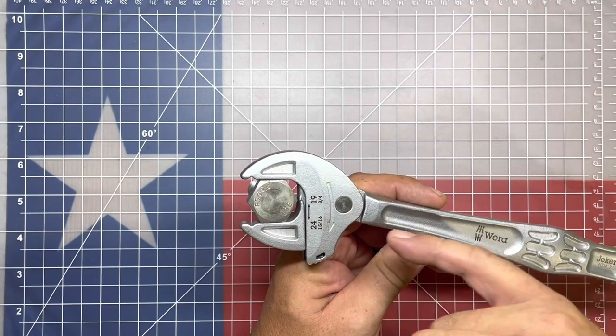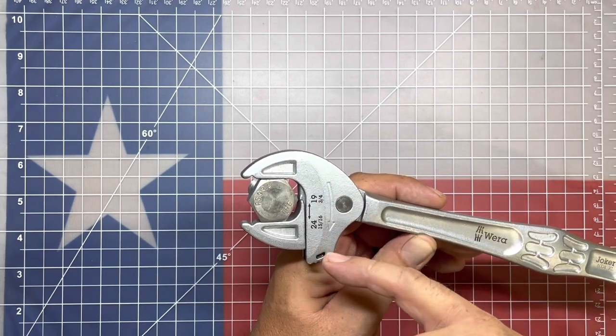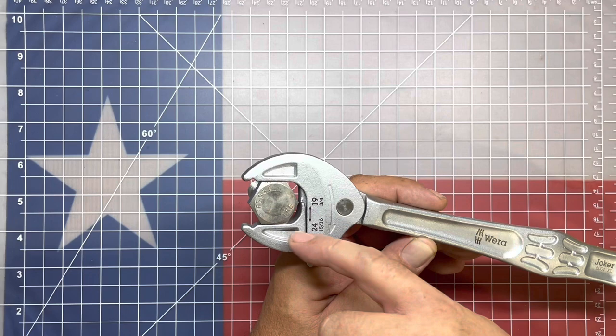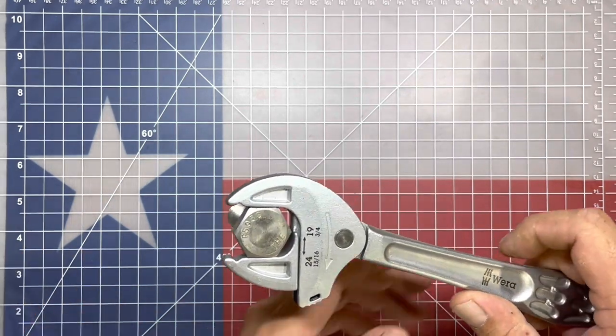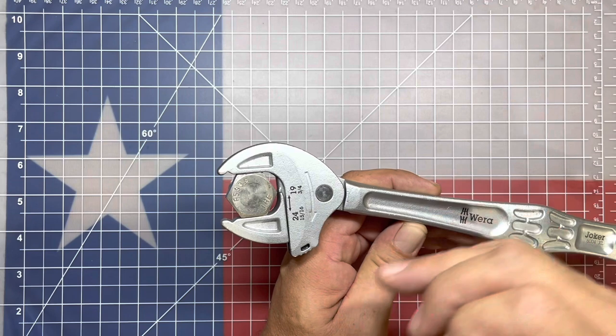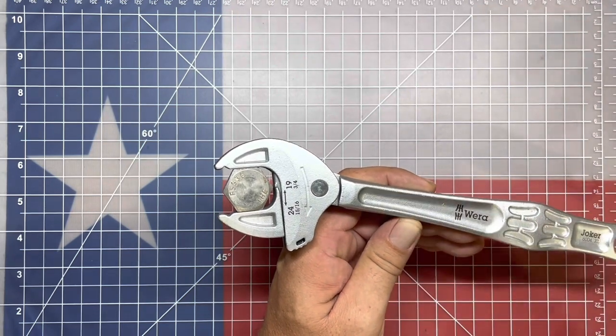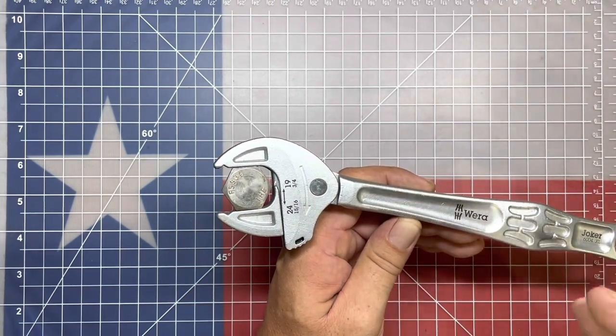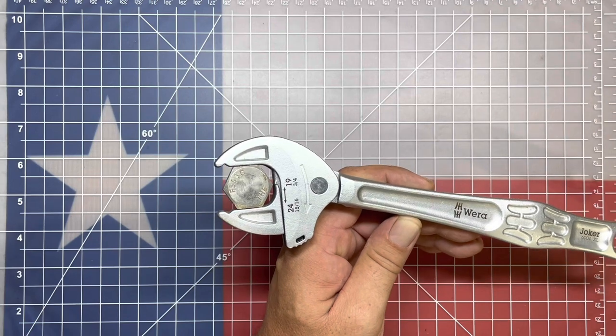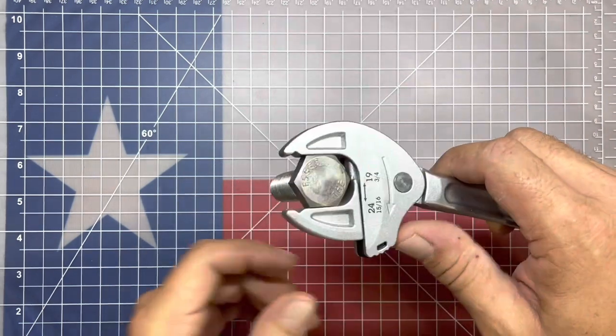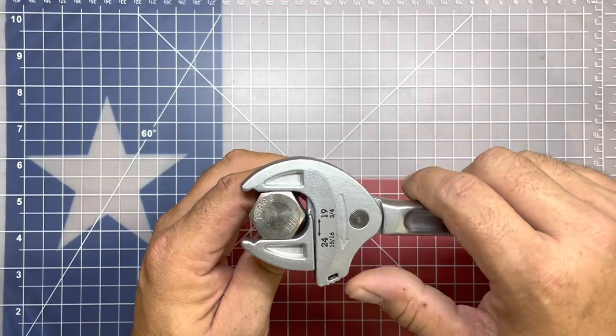Now, unlike the Knipex, these can get into a little tighter zones because of the angle, the head, and the construction of the wrench. And though they are limited to a particular size range for each particular wrench, unlike the Knipex, which have a much wider range of use, these can get into some very, very tight areas.